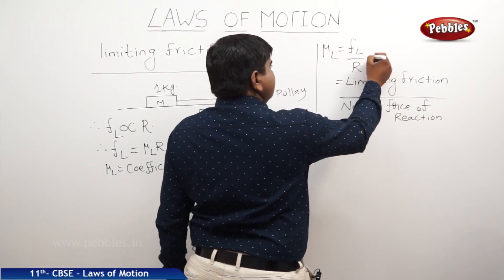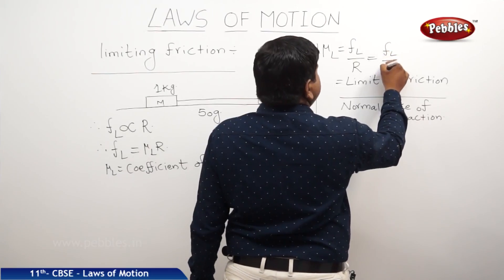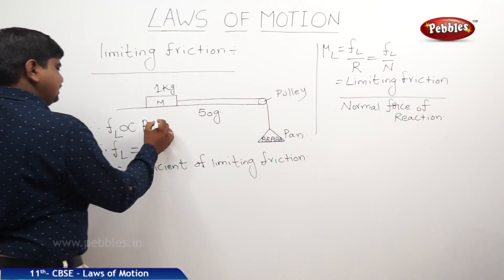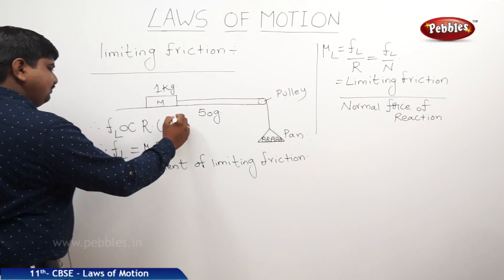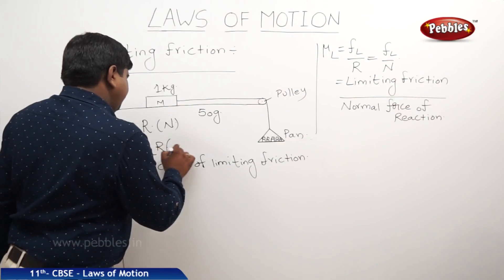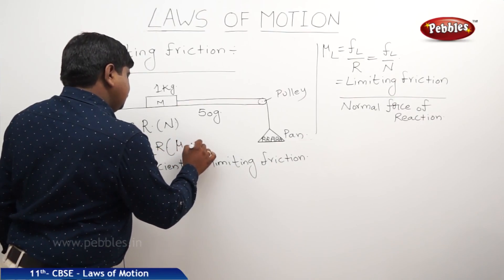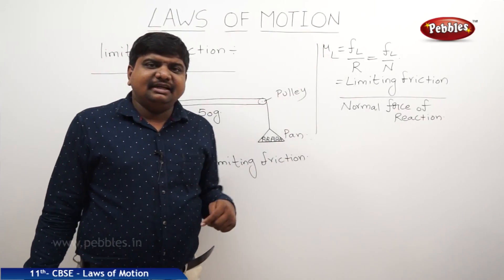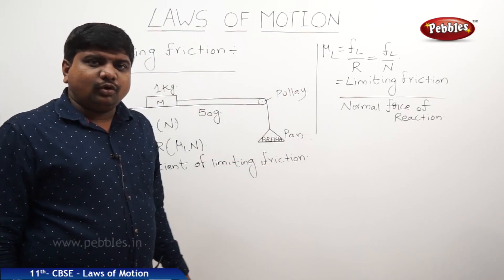So this is also written as FL by N also. In view, generally we are taking this R as N. So FL is proportional to R or N. Therefore, it will be μL*N also. This is the definition of limiting friction and limiting friction coefficient.